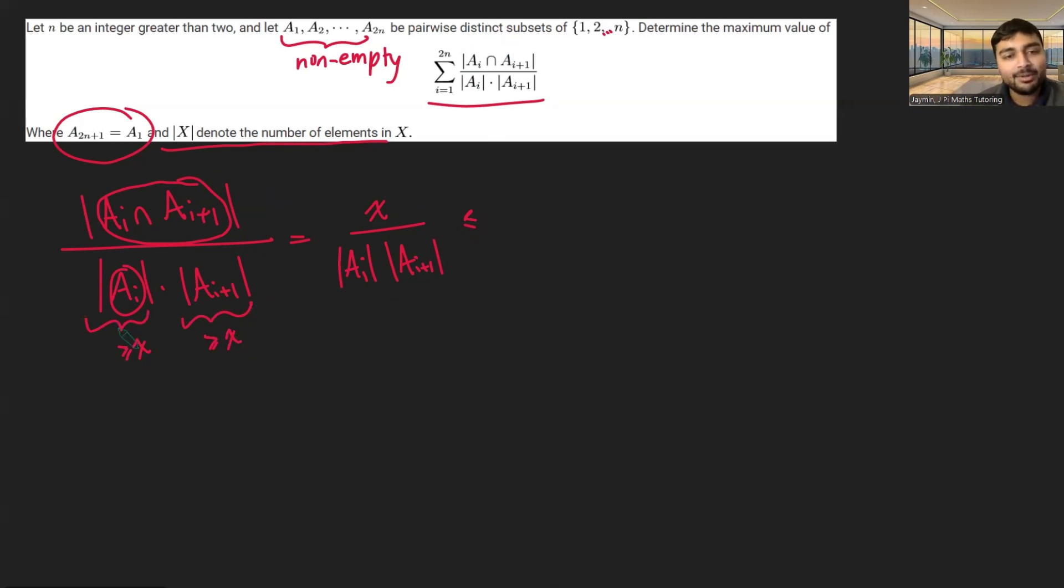But hold on a minute, they both can't be x, because if they were both x, and the intersection had size x, that would mean that sets ai and ai plus 1 were identical. But that's not allowed, because these sets are pairwise distinct.